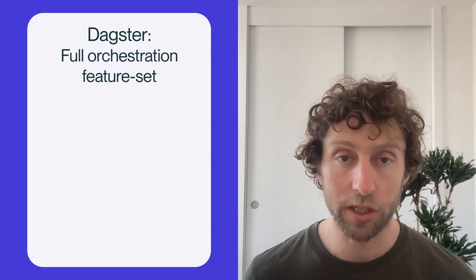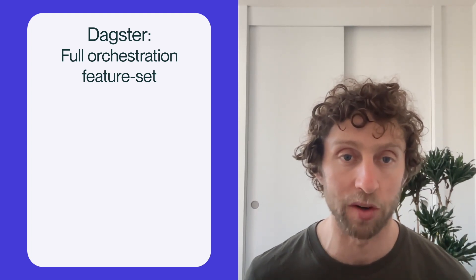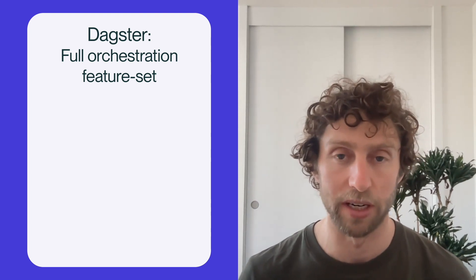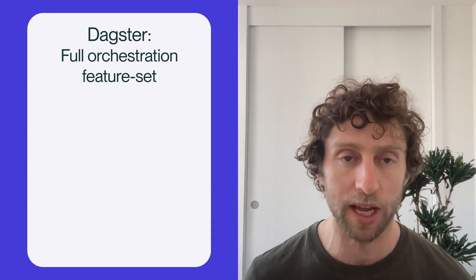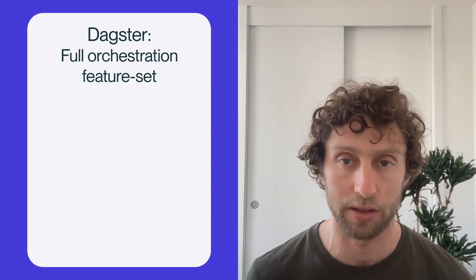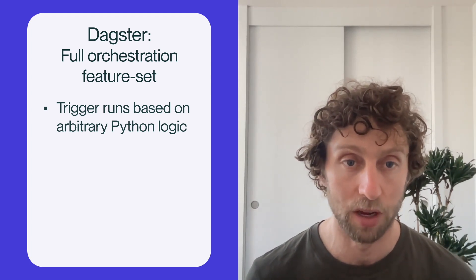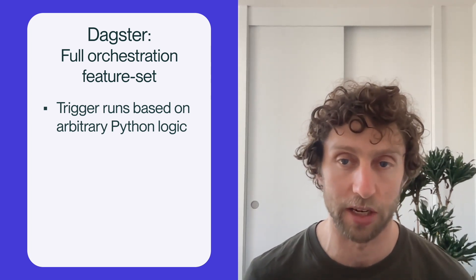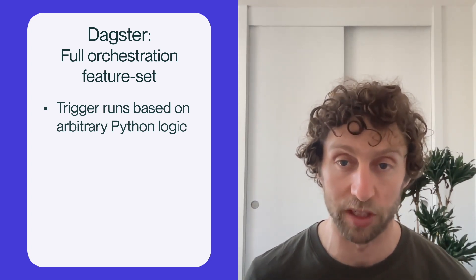Another way that Dagster is different from dbt-specific tools like dbt Cloud is in the depth of Dagster's orchestration feature set. Orchestration has been Dagster's primary job since its inception, and over that time it's grown to handle a very long tail of orchestration needs. For example, to determine when you run your dbt models, you often need to rely on logic that's specific to your use case — like checking whether new source data has arrived, or incorporating a specific business calendar into your scheduling. In Dagster, you can write arbitrary Python code that triggers runs of your dbt models.